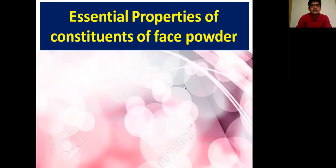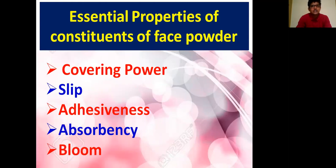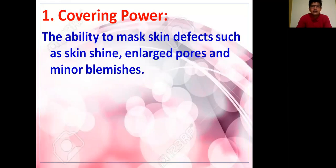These are the essential properties of the constituents of face powder: covering power, slip, adhesiveness, absorbency, and bloom. Face powder contains different constituents, and the specific characteristic properties of the face powder are due to these various constituents. The first property, covering power, is the ability to mask skin defects such as skin shine, large pores, and minor blemishes.